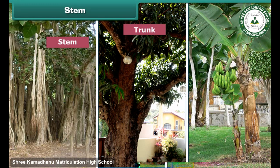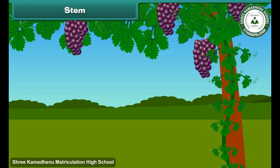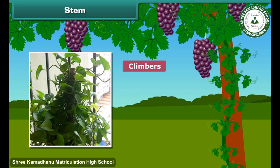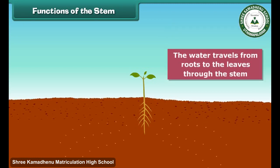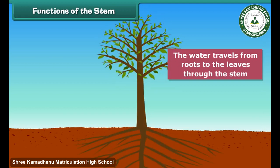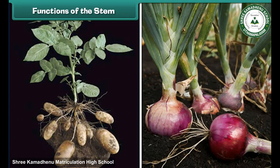Some trees, such as banana, have a thick but soft and green stem. In some plants, the stems are so weak that they cannot hold the plant upright — such plants climb with the help of a support and are called climbers; money plant is the best example. The water taken in by the roots travels to the leaves through the stem, and the stem also carries food made by leaves to all parts of the plant. Sometimes food is stored in the stem, as in sugarcane, potato and onion, and we eat these stems to get nutrition.